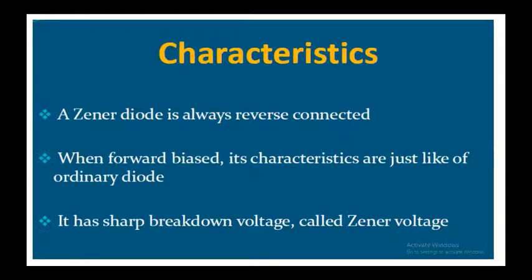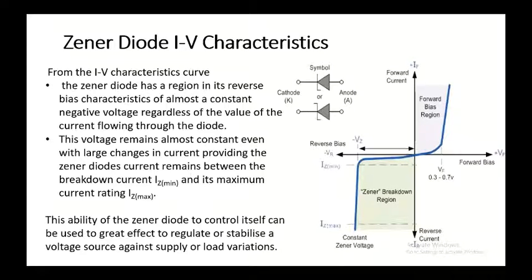When forward biased, the Zener diode's characteristics are just like an ordinary diode. In the reverse biased condition there is a Zener breakdown which gives a sharp breakdown voltage called the Zener voltage. This is the VI characteristics graph, where the X-axis shows the voltage and the Y-axis shows the current.